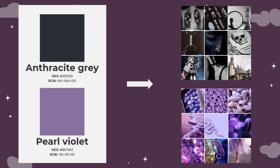Both mood boards have hints of other colors in them and that is totally okay. The main thing you're looking for is aesthetic. This can be patterns, textures, places, moods, anything you want, just so long as it gives a foundation for a character to be created.